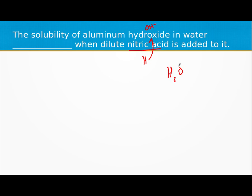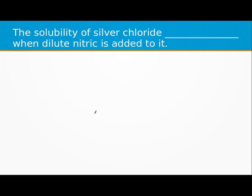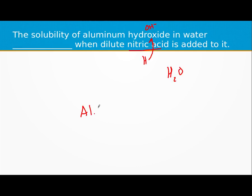We would be removing the OH. That would cause your reaction, which would look something like aluminum hydroxide turns into aluminum ions and hydroxide ions.